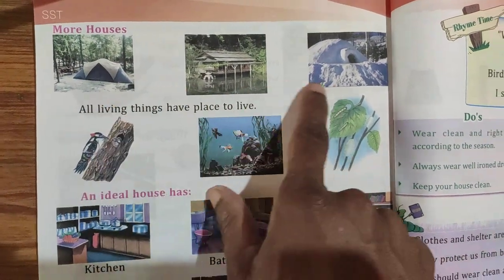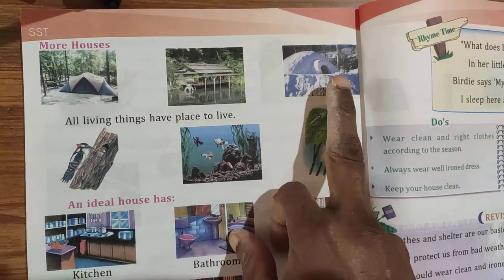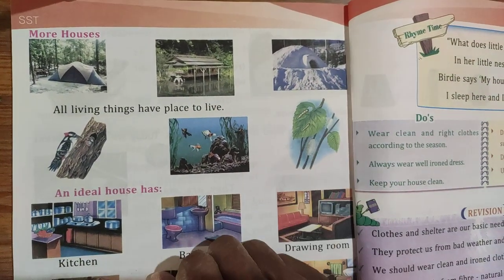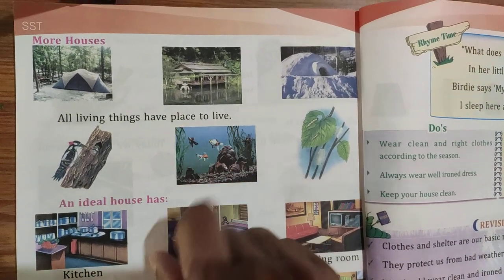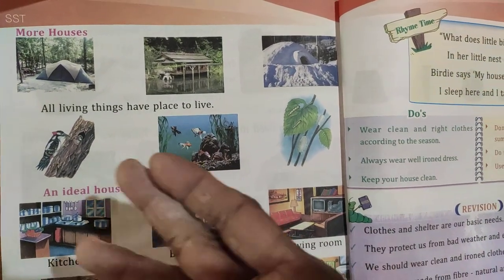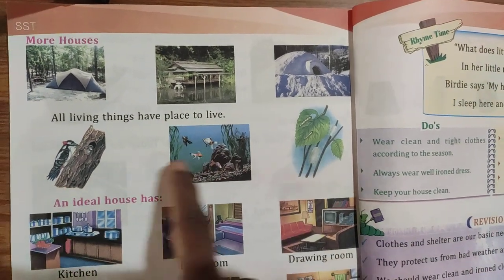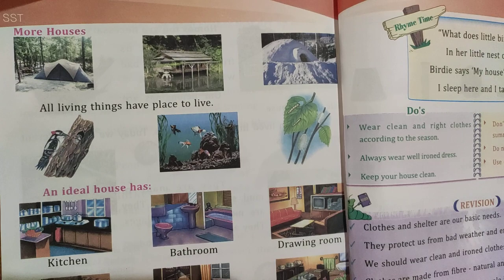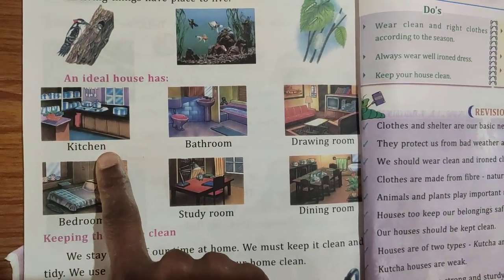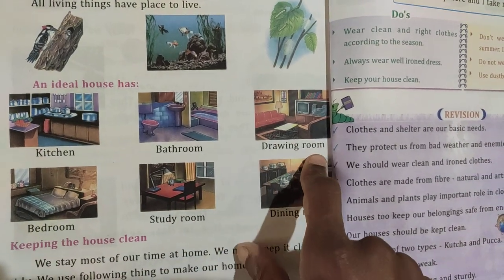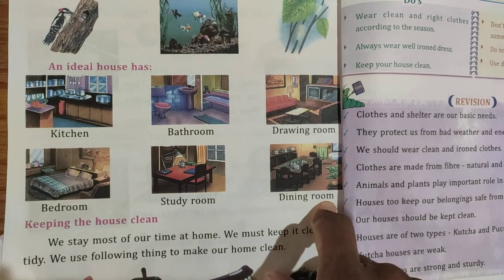You can see different types of houses — the tent, the hut house, the igloo. All living things have a place to live — even birds, fish, and worms. An ideal house has a kitchen, bathroom, drawing room, bedroom, study room, and dining room.